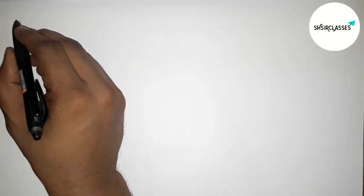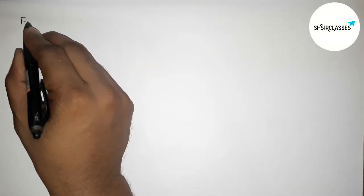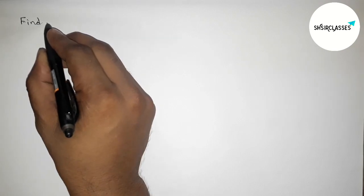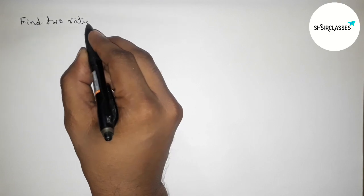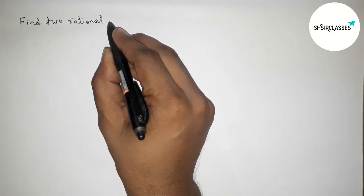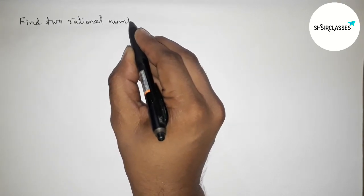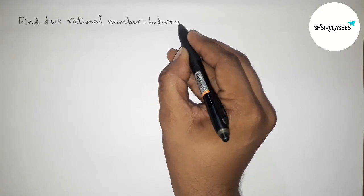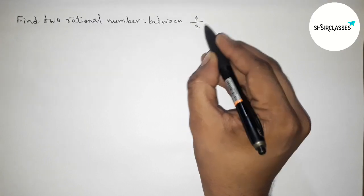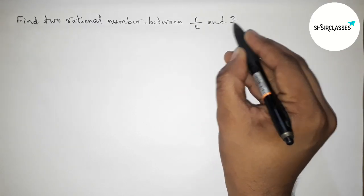Hi everyone, welcome to SI share classes. Today in this video we have to find two rational numbers between 1 by 2 and 2 by 5 in an easy way. So please watch the video till the end, so let's start the video.